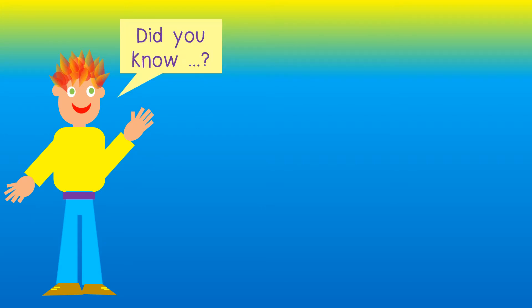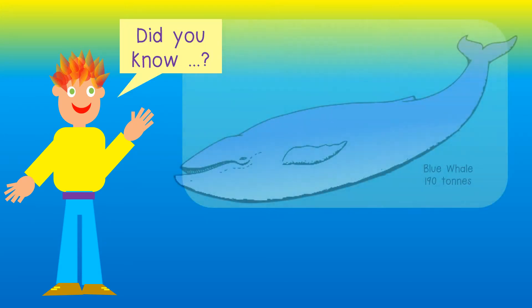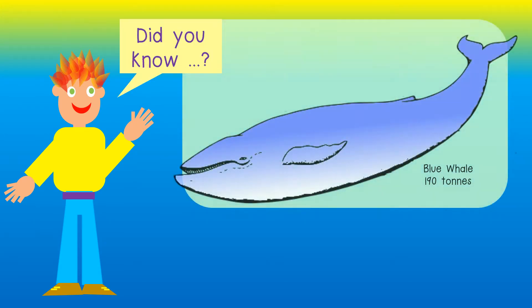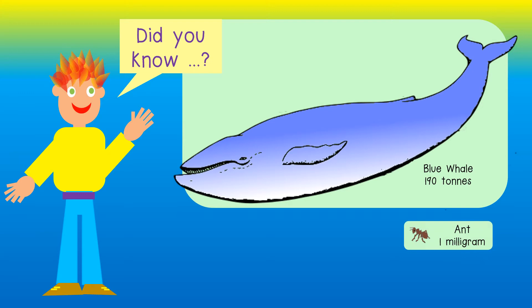Did you know? The largest animal that has ever been known is the blue whale. The blue whale has a mass of 190 tons. A little ant has a mass of only 1 milligram.